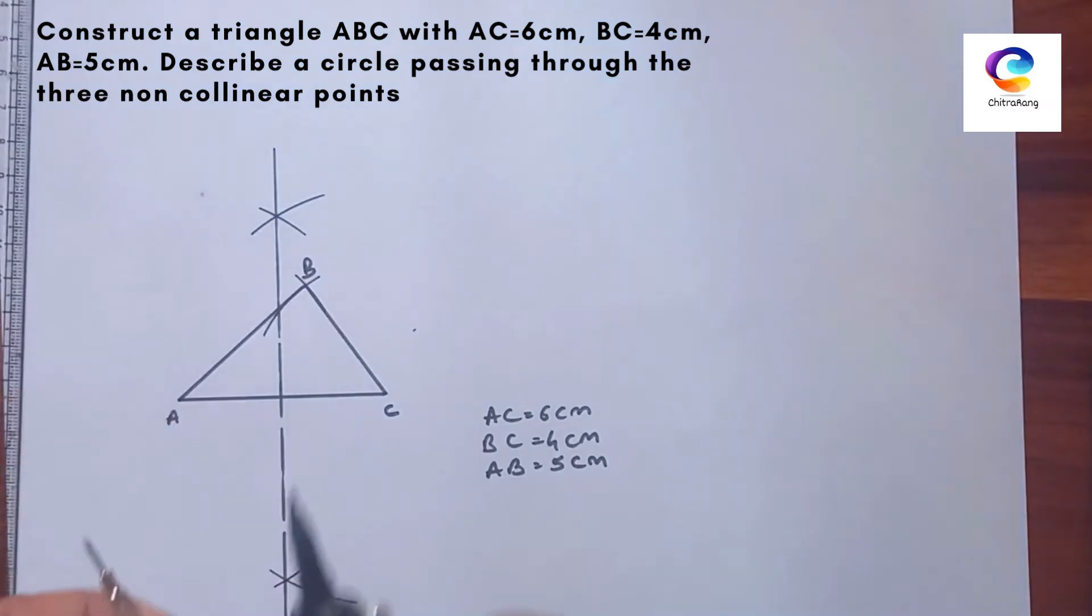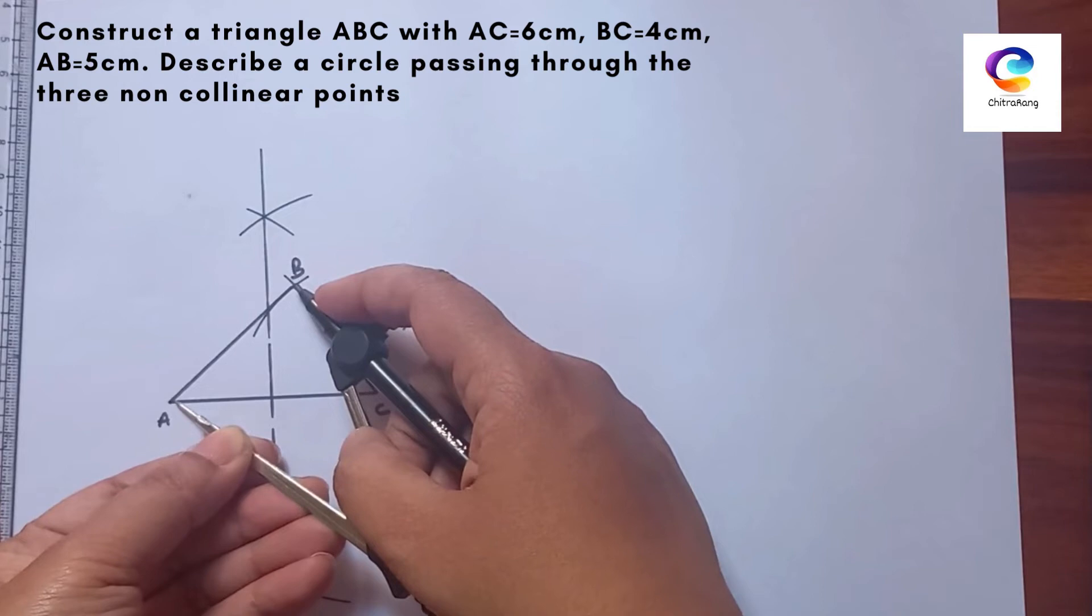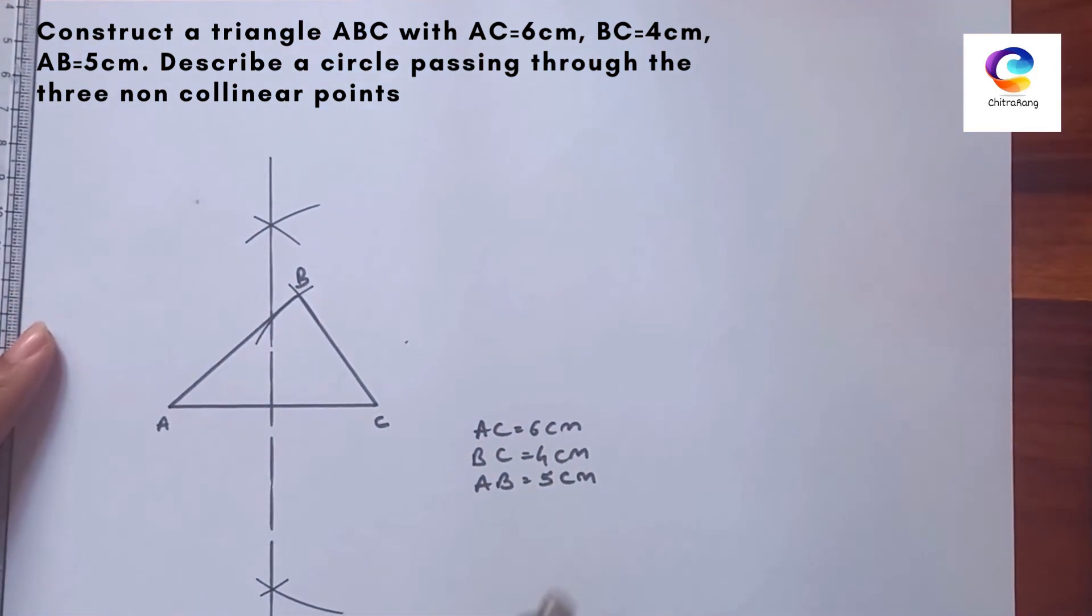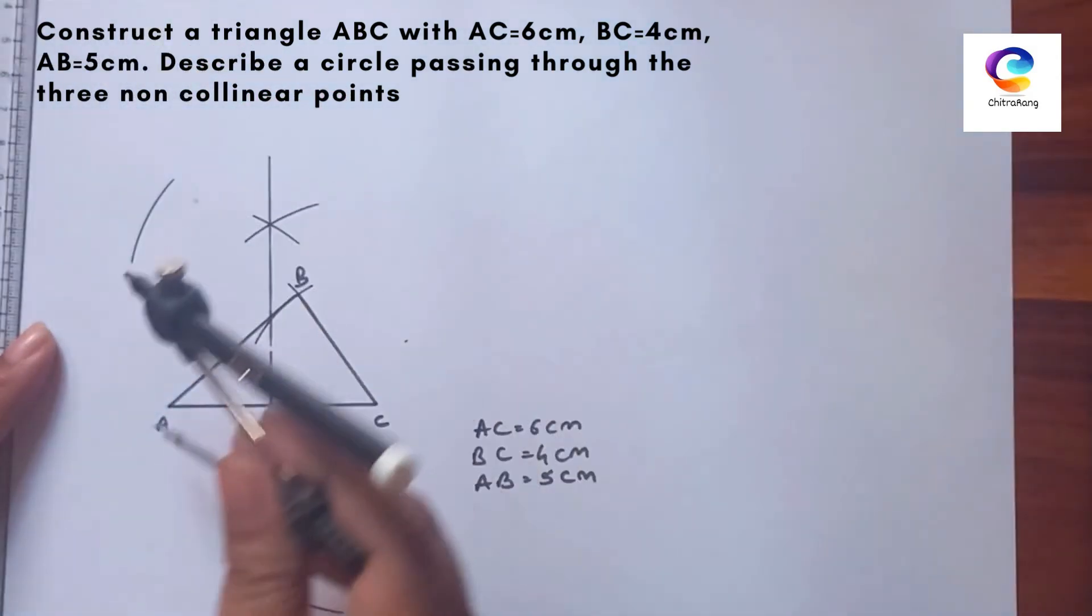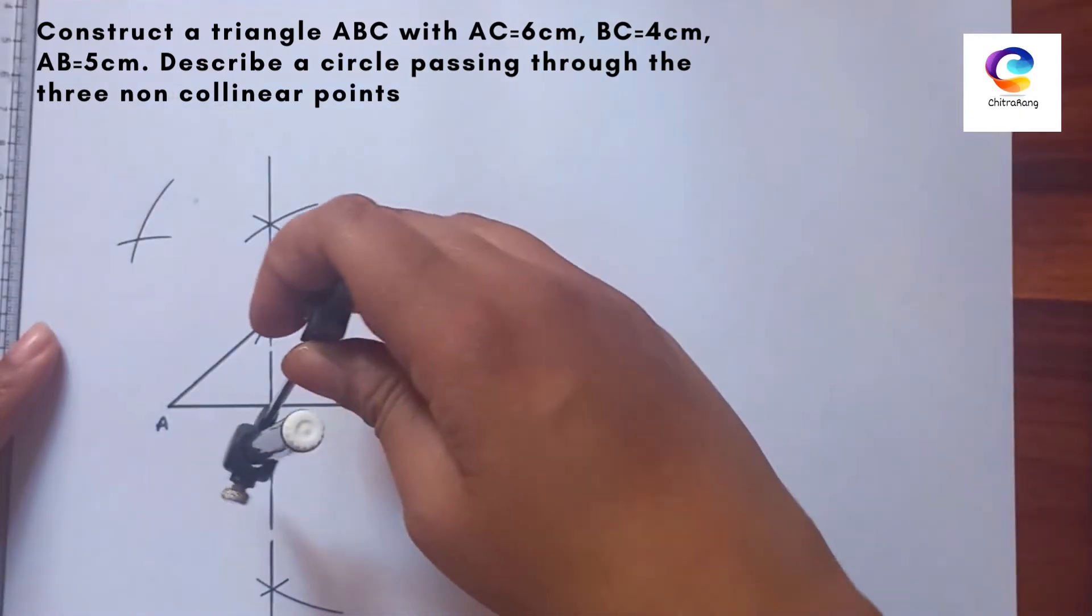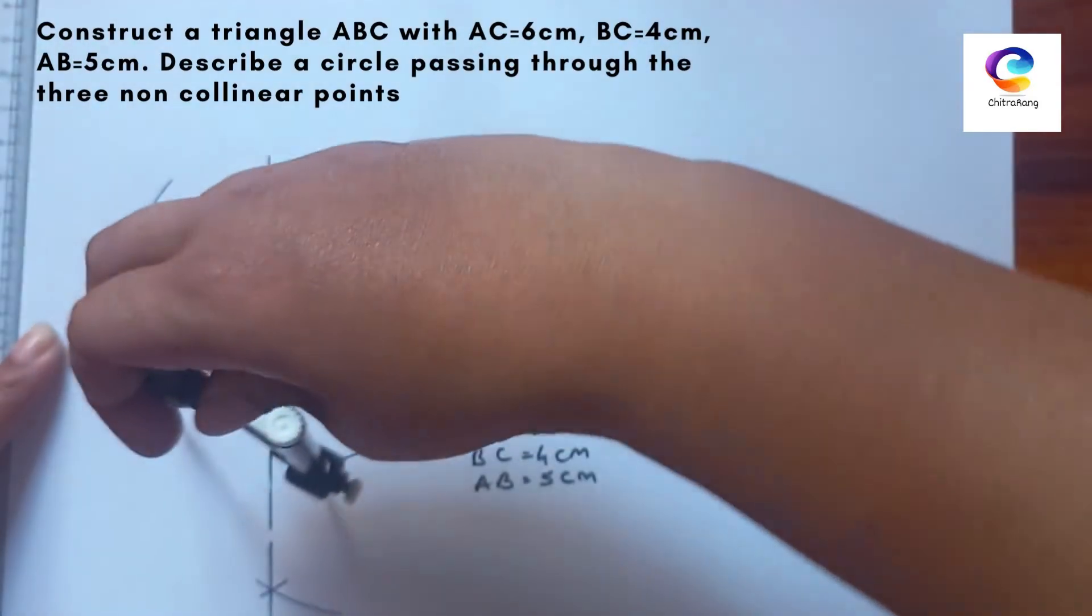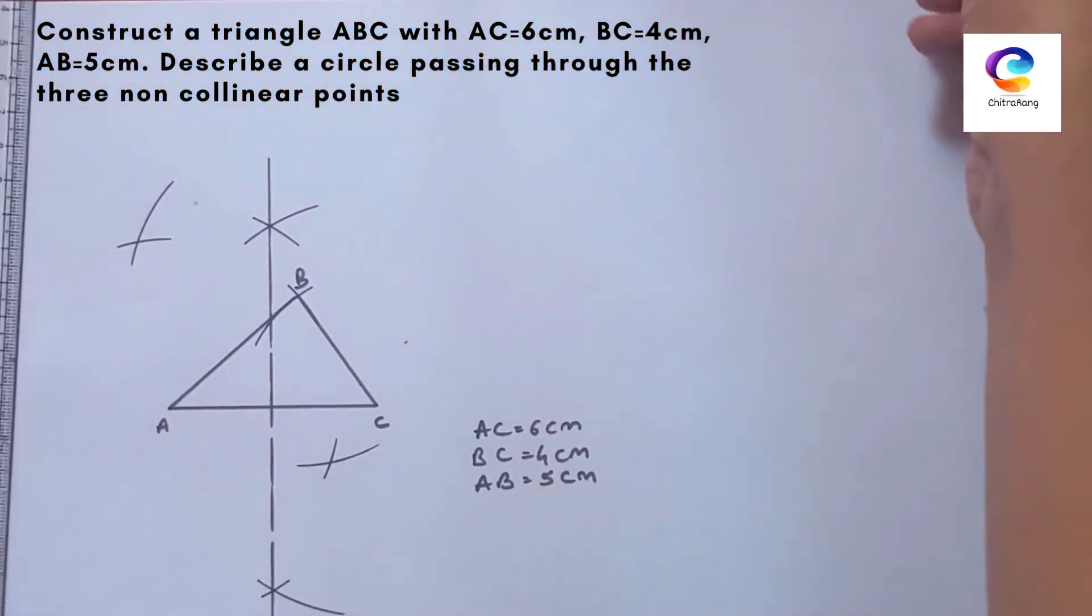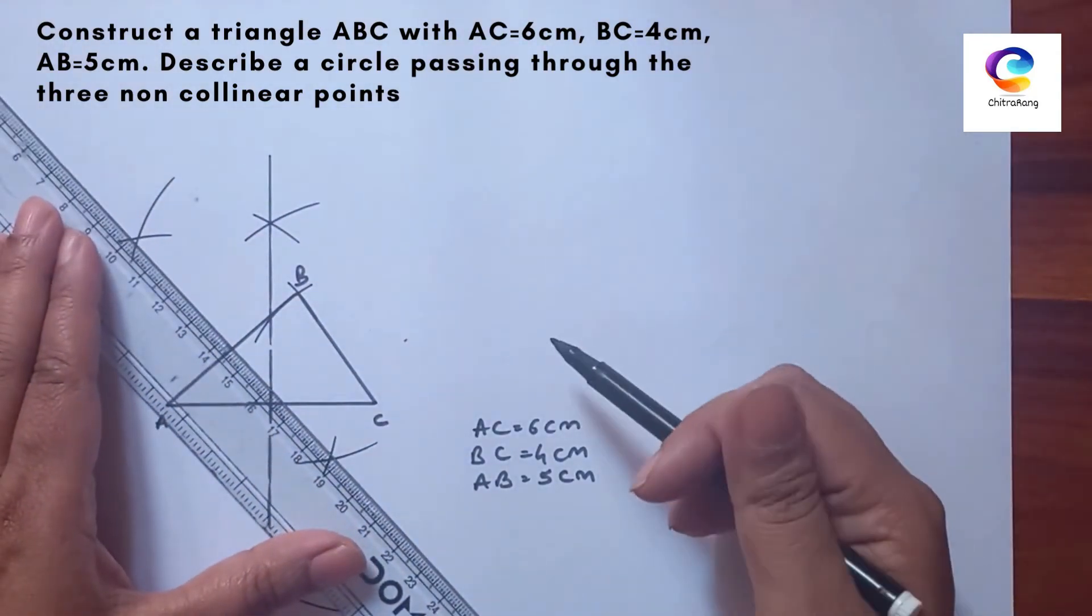Now we will bisect AB also. From points B and A, we will draw arcs on both sides of that line. Do not change the distance measurement in the compass, and bisect this AB line.